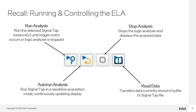Auto Run Analysis behaves similarly to the Run Analysis button, except that the Logic Analyzer keeps running even after the trigger occurs. The data display gets updated every time this happens, providing a continuous update on the status of the monitored signals. You can stop the analysis at any time. Finally, the Read Data button transfers any captured data from the buffer on the device to the SignalTap file. This is used if, for some reason, data is not automatically transferred or the JTAG connection was lost temporarily.